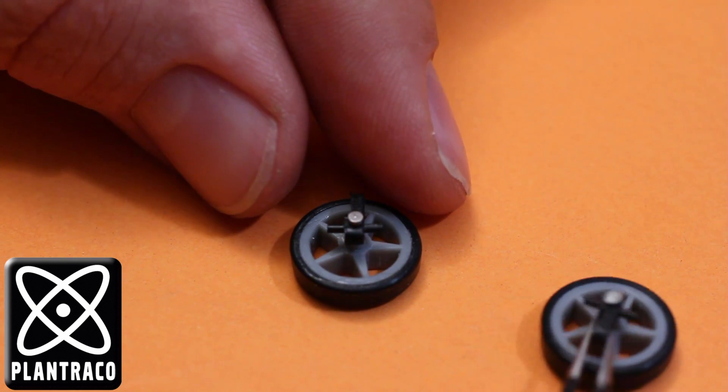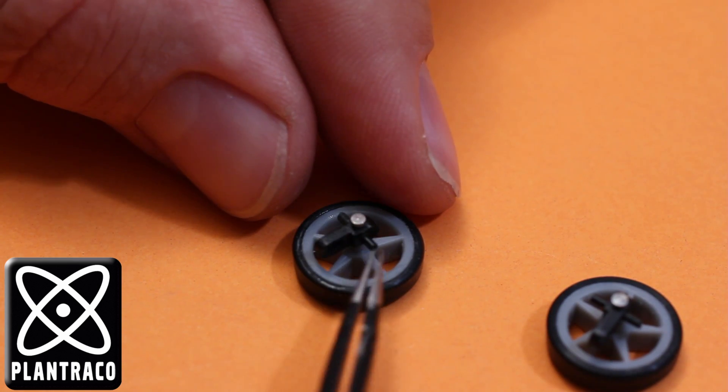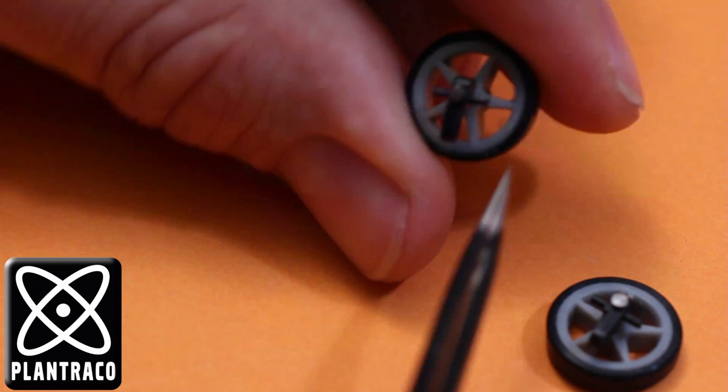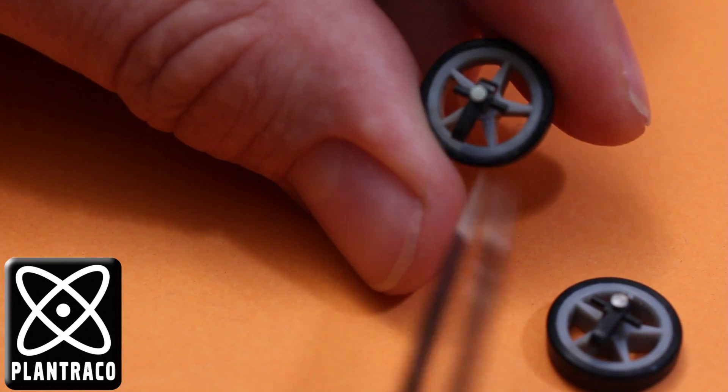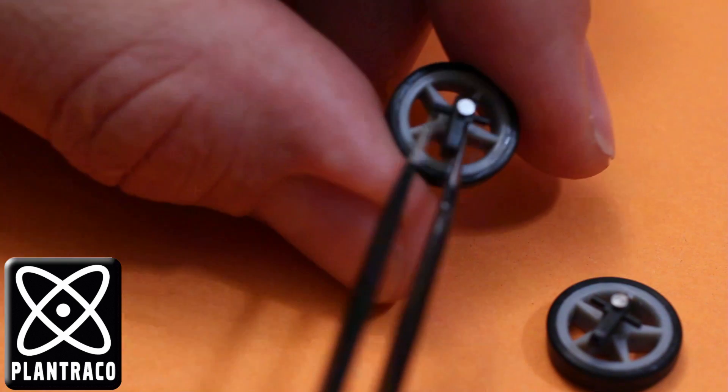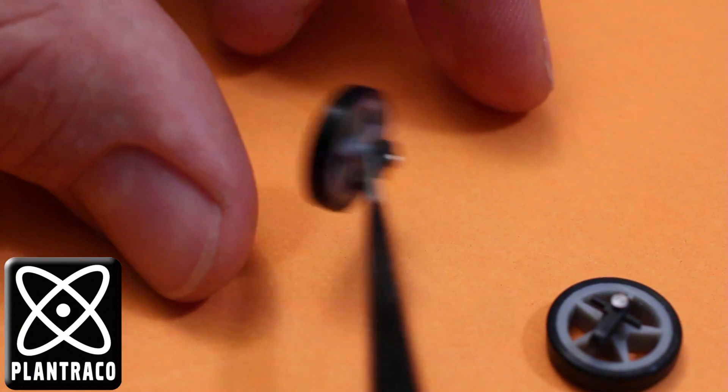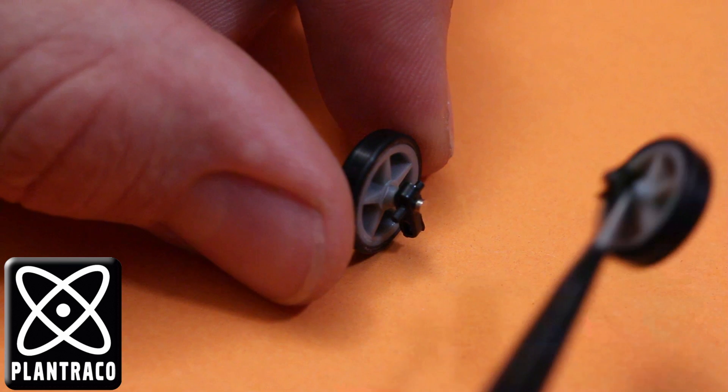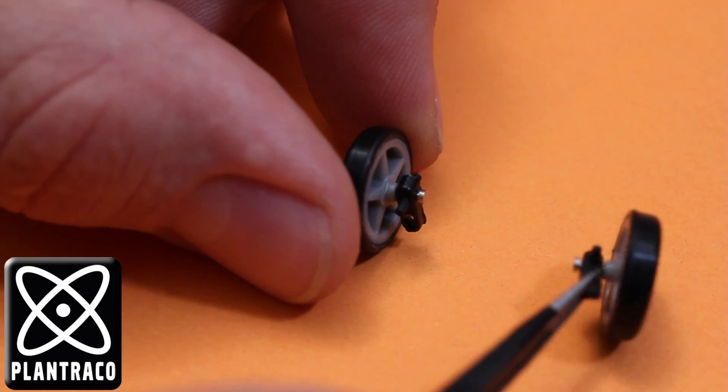There. So. Now they're ready to install on the car. But I'll just show you once more about that notch in the knuckle I was telling about. So this one's notched on the right side and that will go on the left side of the car. Like this. And this one's notched on the left side and that will go on the right side of the car. Like this.